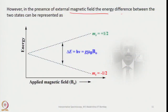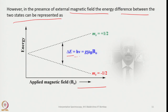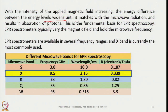In the presence of an external magnetic field, the energy gap between the two states steadily increases as field strength increases, given by ΔE = hν = gμ_B B₀. As the applied field increases, the energy difference widens until it matches the microwave radiation and results in absorption of photons. This is the fundamental basis for EPR spectroscopy.